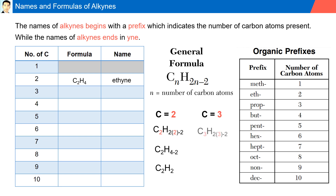For a three-carbon alkyne, solving gives us C3H4. Since there are three carbon atoms, the name starts with prop, and since it's an alkyne it ends in -yne: propyne. The difference between one alkyne and the next is again CH2 — one carbon and two hydrogen. So we can predict our four-carbon alkyne to be C4H6. Since there are four carbons, the name starts with but, and since it's an alkyne it ends in -yne: butyne.